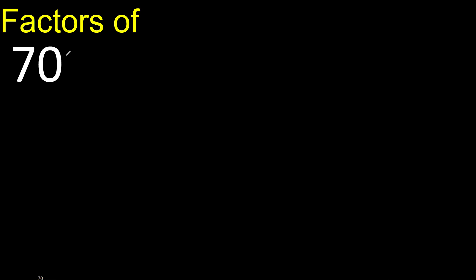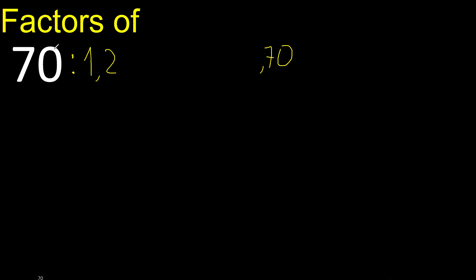Factors of 70. Always start with 1 — 70 divided by 1 is 70. Next is 2, divided by 2 is 35.